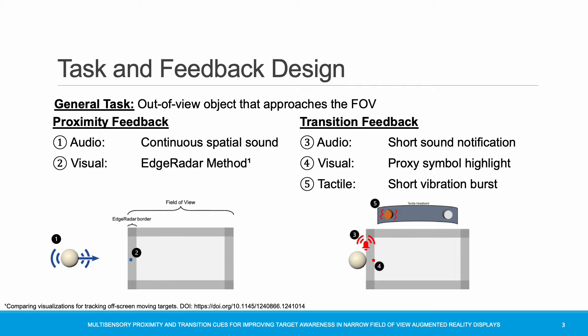Cues can be presented in visual, auditory, or tactile manner. To enable tactile feedback, we created a custom-made headband with two vibration motors placed at minus 45 degrees and plus 45 degrees from the user's point of view. For auditory proximity cues, the virtual object emits a continuous spatial sound as long as it is located out of view. For visual proximity, we used an edge radar method, where information is represented by a proxy symbol moving along the edge radar border. Regarding transition cues: auditory transition triggers a short sound notification when the virtual object touches the border of the field of view; visual transition highlights the proxy symbol in red on the edge radar border; and tactile transition provides a short vibration burst on the corresponding side of the tactile headband.